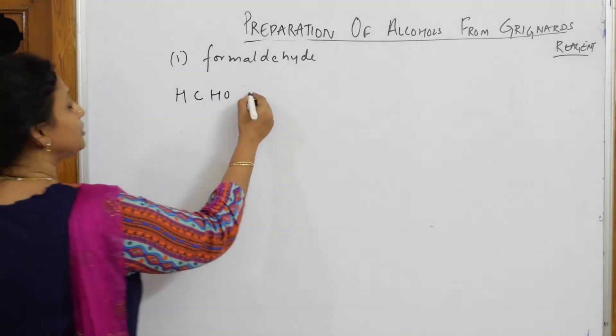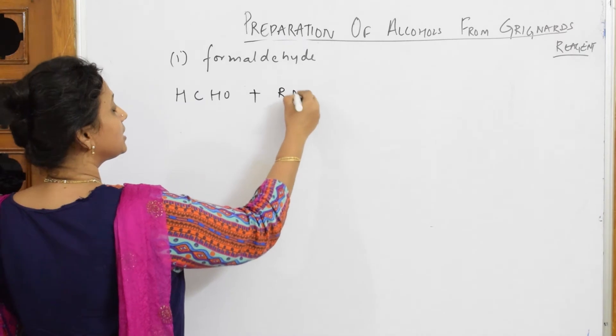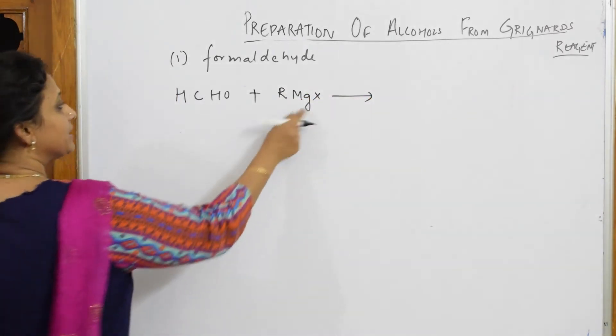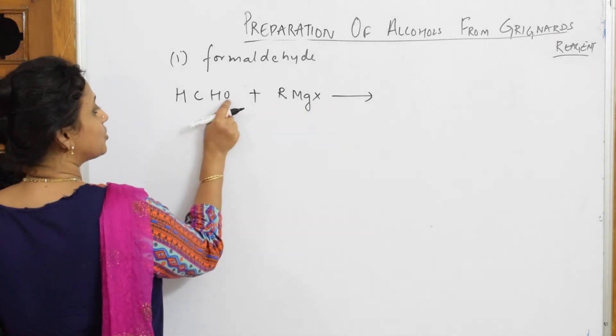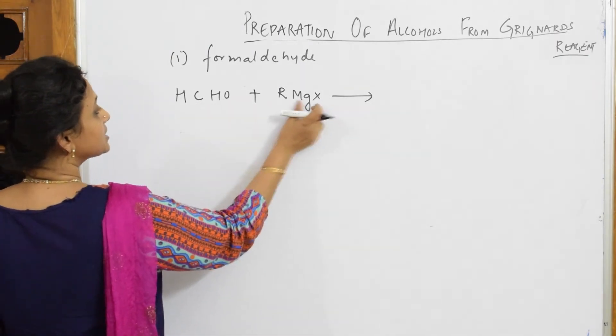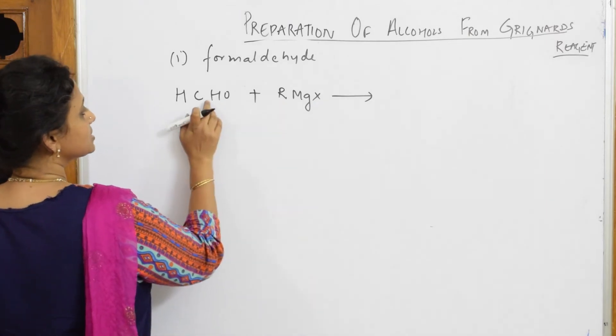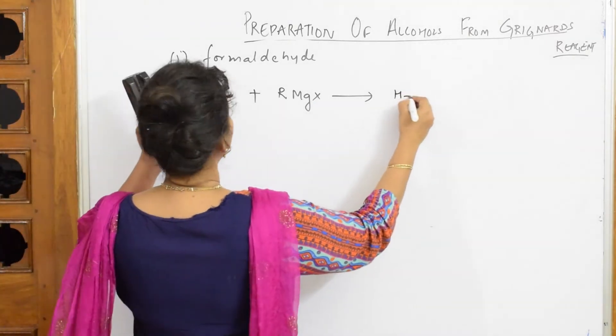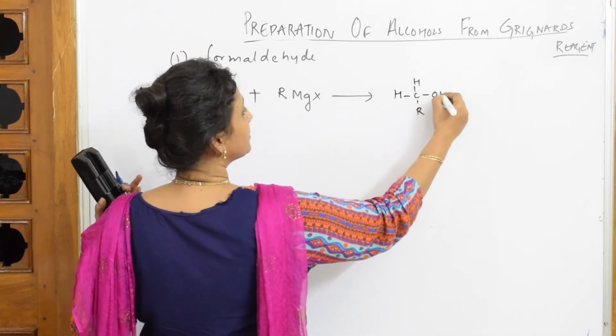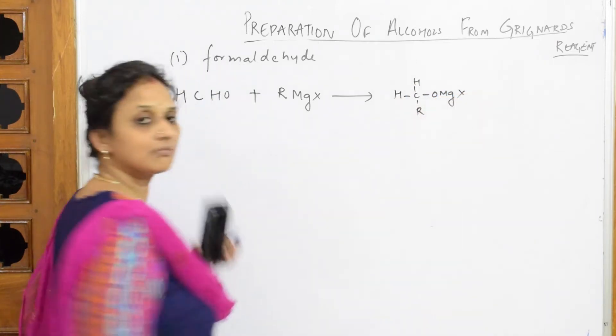When I take formaldehyde, I am going to add now RMgX. So what do I get? I said already, magnesium, this goes and adds to oxygen. R goes and adds to this carbon. Again MgX goes and adds to oxygen, R goes and adds to this carbon. You get RCH2OMgX.